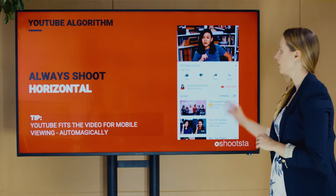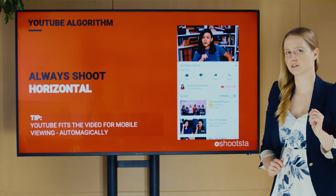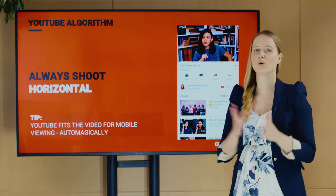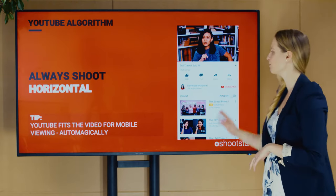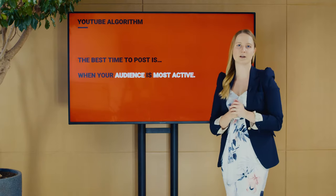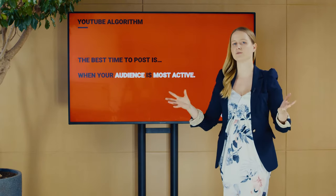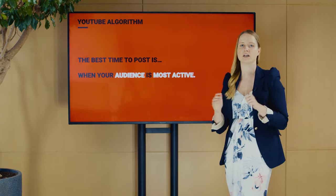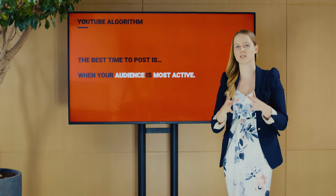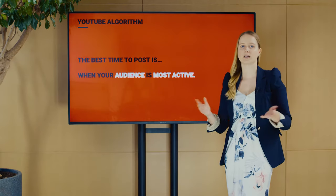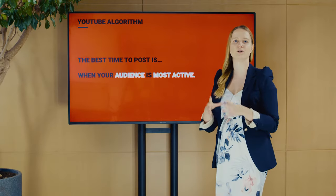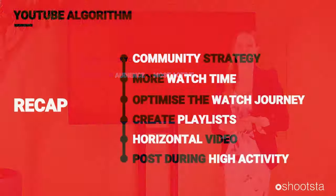A frequently asked question: should I shoot horizontal or vertical? For YouTube, always shoot horizontal — it automatically fits mobile viewing every time. Another common question: what is the best time to post? There's lots of information online about best times and days, but keep it simple: when is your audience most active? If you're based in Australia and targeting another country, make sure you post during that country's time zone.